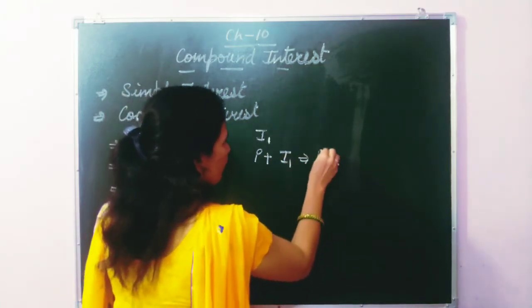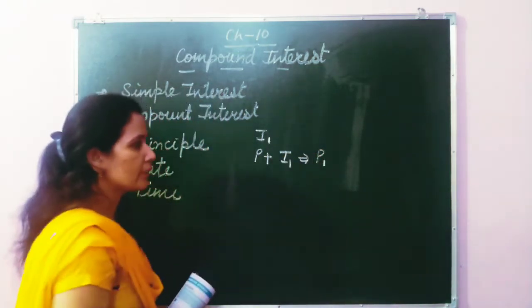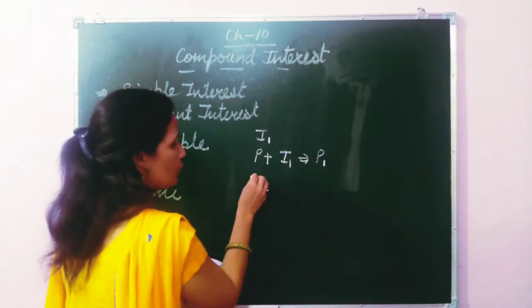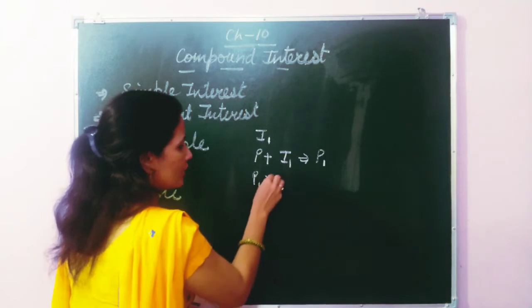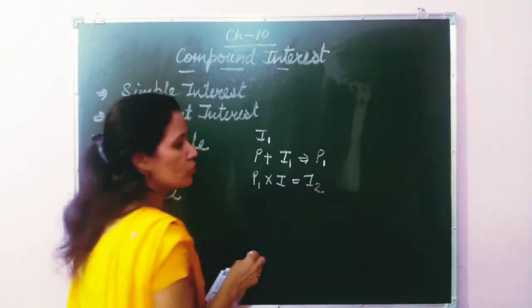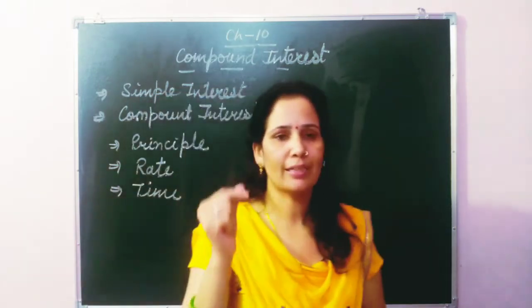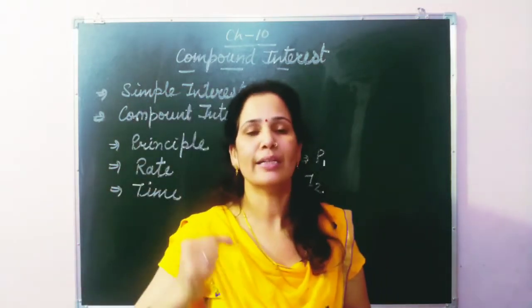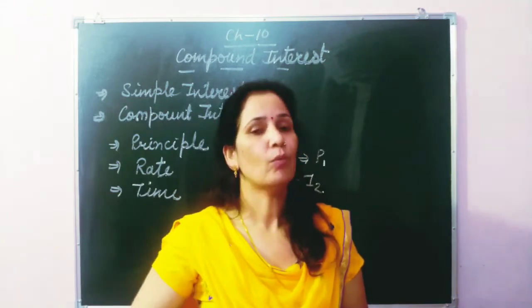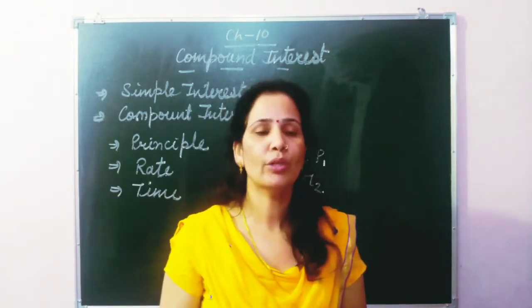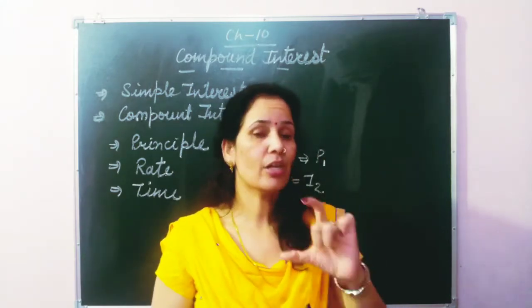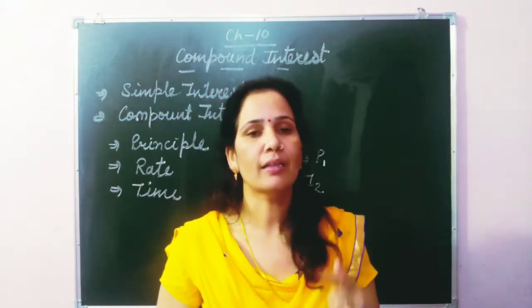So we get P1. For the next year we calculate the interest again on this amount, and from here we get Interest 2. Like this, students, every year we are calculating the interest and adding it to the principal, and whatever the amount we are going to pay at the end of the year — the extra amount paid beyond the principal is our compound interest.